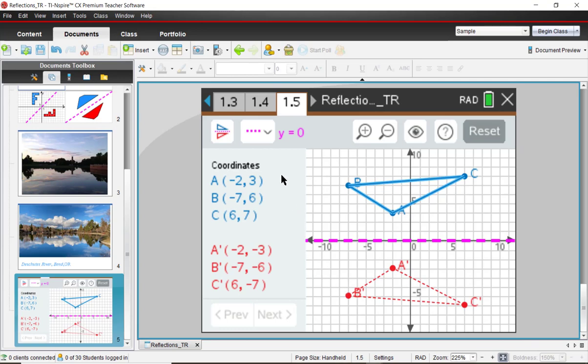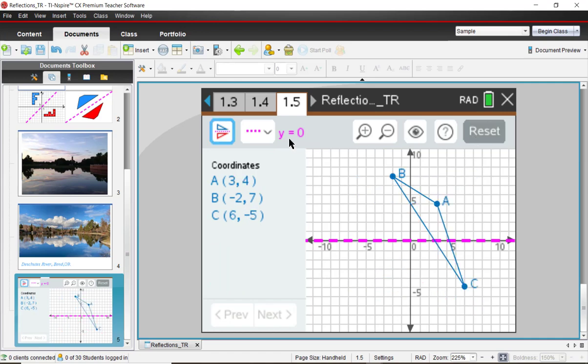To check this with the software, we'll go ahead and reset, press reset. And we're going to change the reflection line to be the vertical line x equals 0, which is also the y-axis.